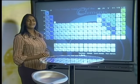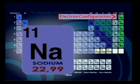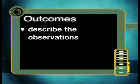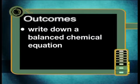For the experiments in this series, we will choose examples of metals from each of these groups. In this lesson, we will be focusing on the reactions of the Group 1, or alkali metals — specifically lithium, sodium, and potassium. By the end of this lesson, you should be able to describe the observations, name the products, and write down a balanced chemical equation for each of the reactions that you see.